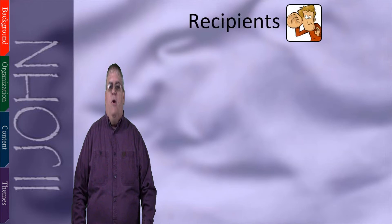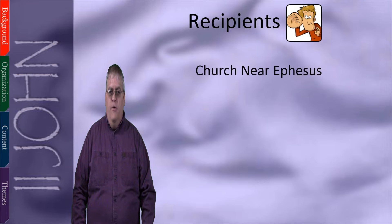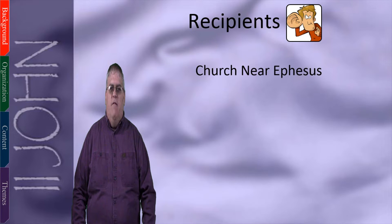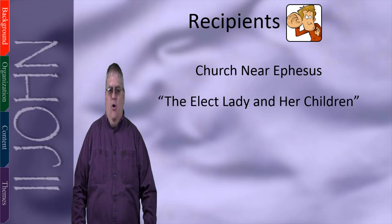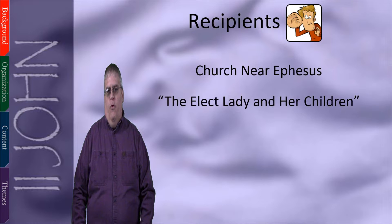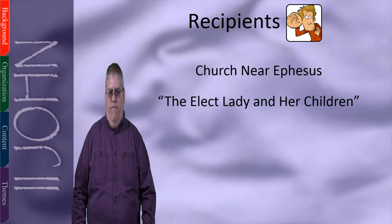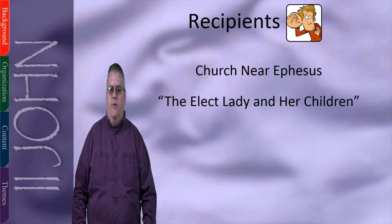The recipients are likely a particular church under John's care around the city of Ephesus. In this book, the recipient is called the Elect Lady and Her Children. This could possibly refer to an individual woman and her family, but it's almost certainly a figurative designation of a local congregation, based on the content.